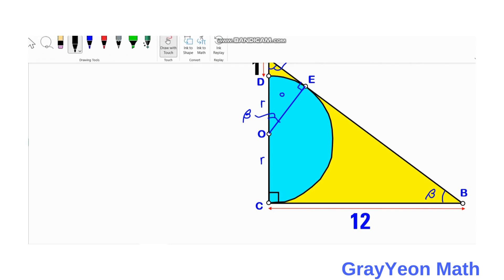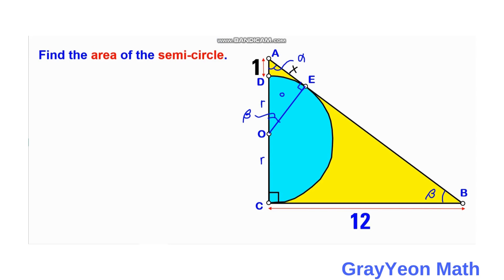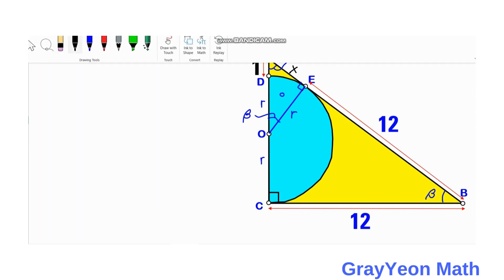We label AE as X. Since E is a point of tangency on the hypotenuse, and C is also a point of tangency on the leg, they share the exterior point B. Therefore EB should also be 12 units. We also label segment OE as R, since it is the radius from center O to the point of tangency E.